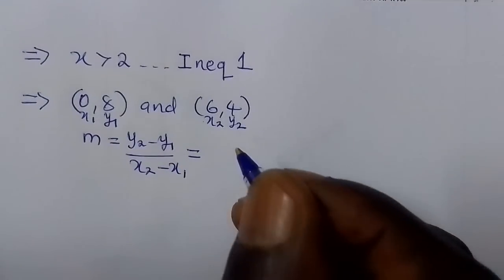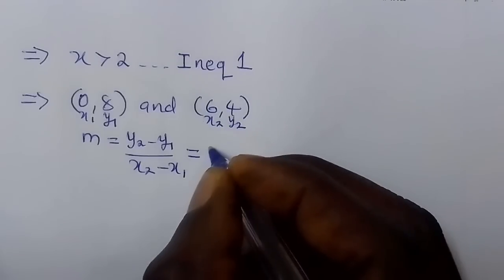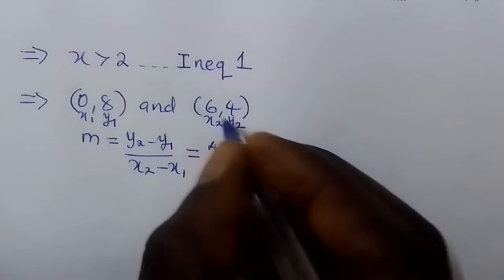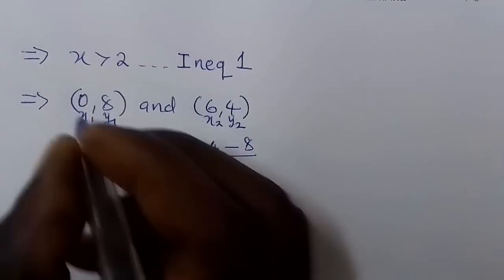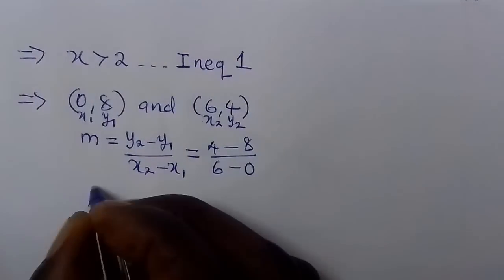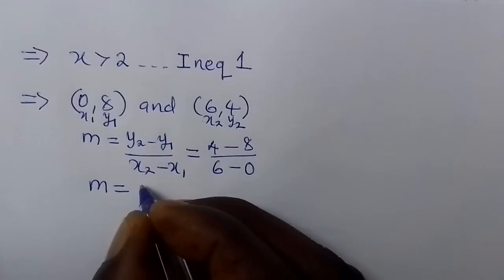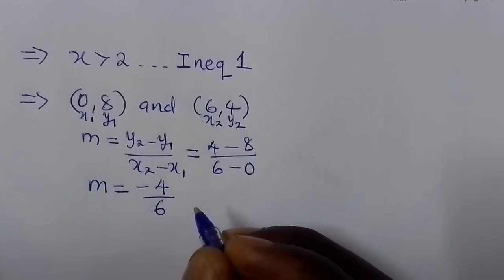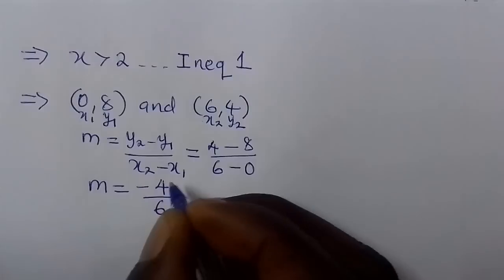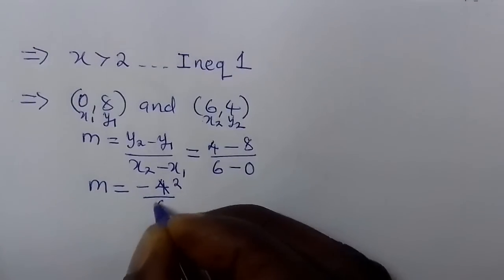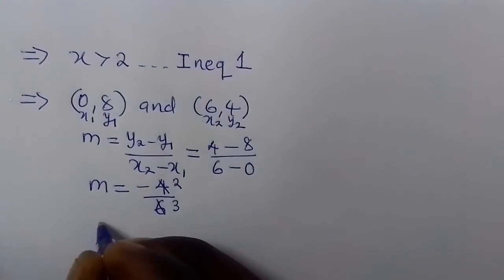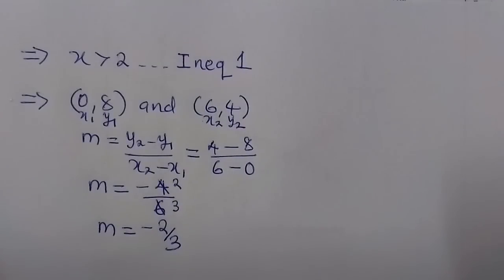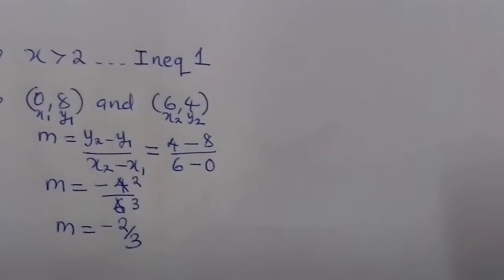Substituting: m = (4 − 8) / (6 − 0) = −4 / 6. We simplify by dividing both numerator and denominator by 2, giving m = −2/3.